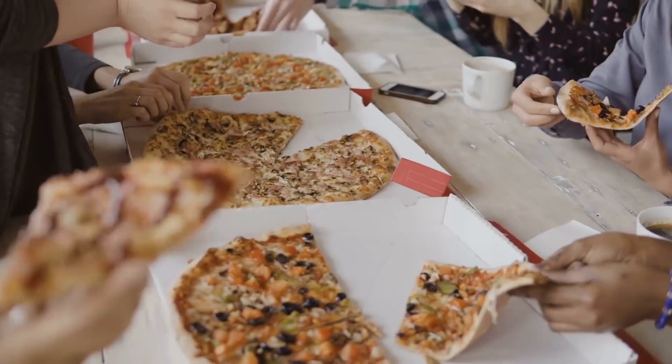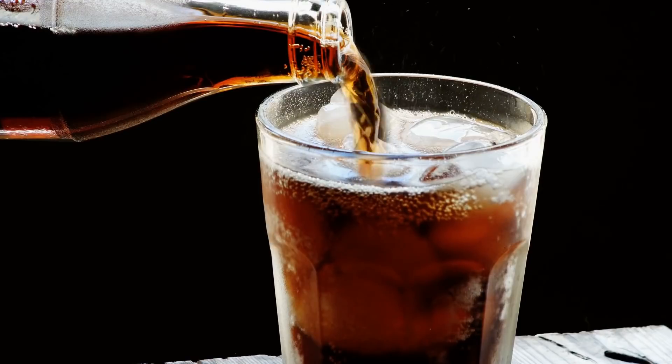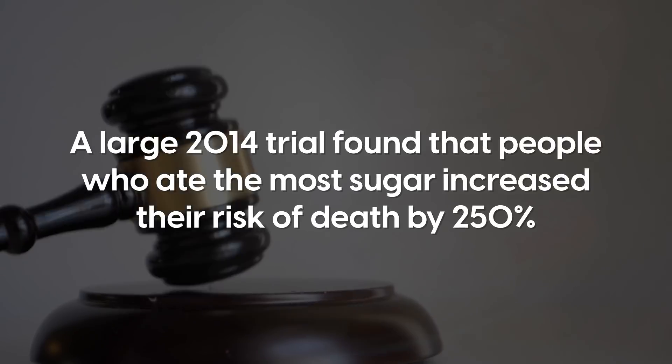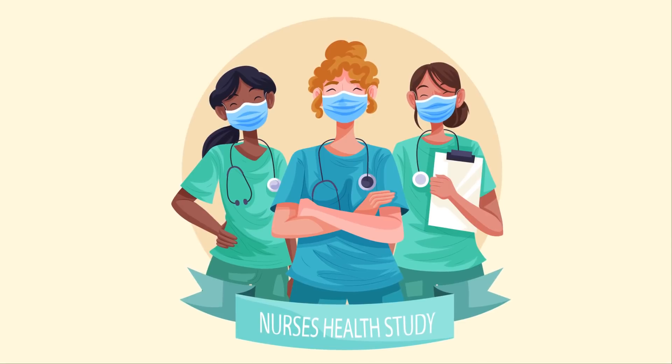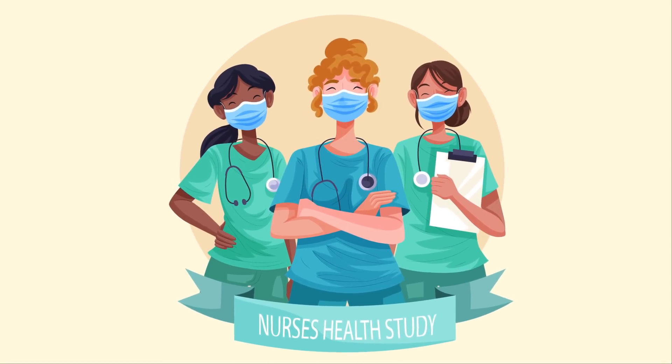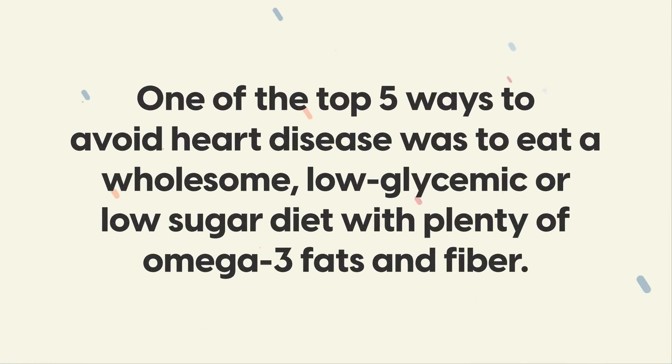Classic offenders are things like pizza, fries and soda. A large 2014 trial found that people who ate the most sugar increased their risk of death by 250%. If you recall the Nurses' Health Study we discussed earlier, one of the top five ways to avoid heart disease was to eat a wholesome, low glycemic or low sugar diet with plenty of omega-3 fats and fiber.